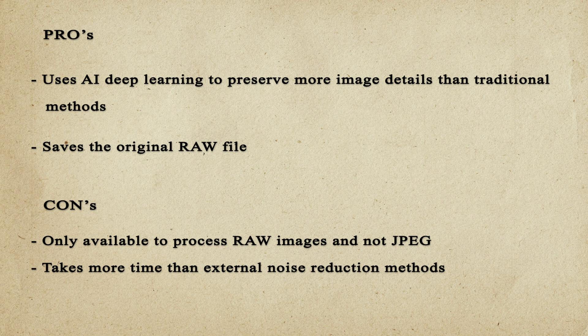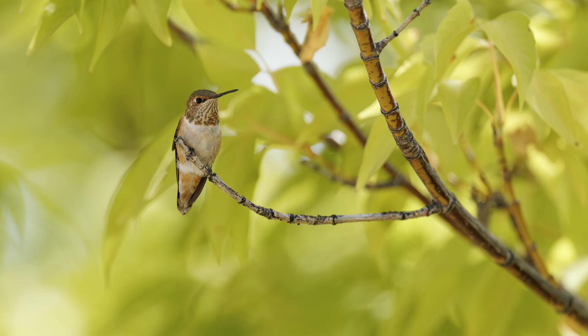The pros of neural network noise reduction are that it uses AI deep learning to preserve more image details than traditional methods, and it also saves the original raw file in case you need it later. The cons are that it's only available for raw images — not JPEGs — and it takes more time than external noise reduction methods. However, it's the most accurate because it's tailored internally with the camera.